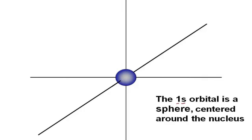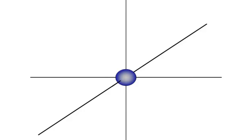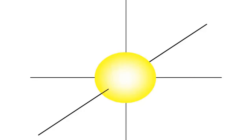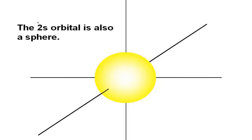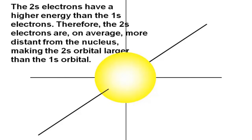Orbitals can only hold a maximum of two electrons. So if we were talking about helium with two electrons, helium would be happy with the 1s orbital. But lithium has three electrons — where would the third electron go? It would go in the next higher energy level orbital, which is the 2s orbital. Notice that we still have an s orbital and still a spherical shape, but the electrons in the 2s orbital are higher energy and, on average, further from the nucleus, describing a larger area they're going to occupy.